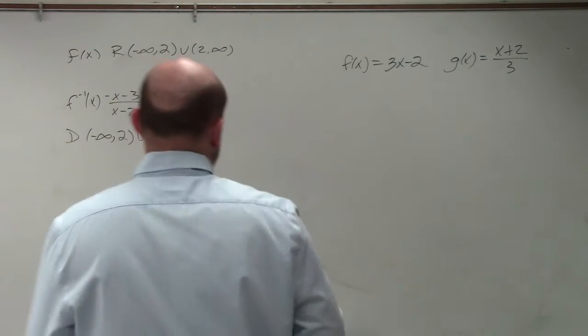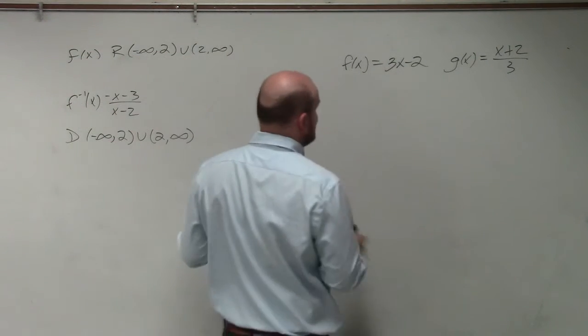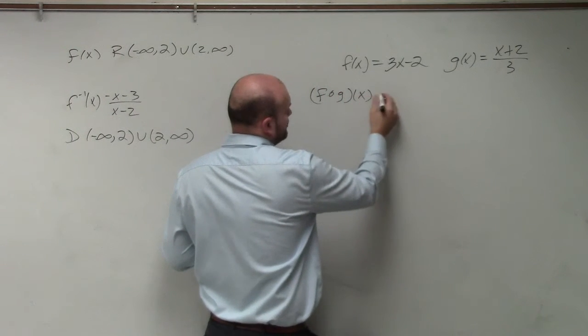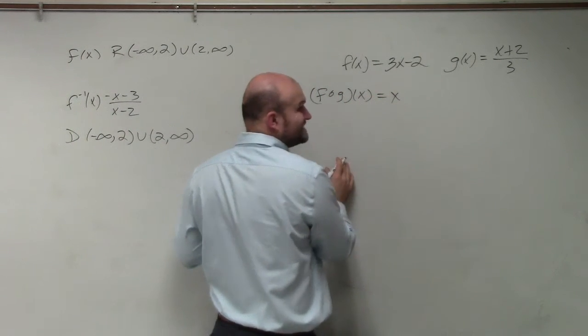So in this example, again ladies and gentlemen, what they're asking us to do is show that these are inverses of each other. So therefore, the composition one way has to give us our identity.